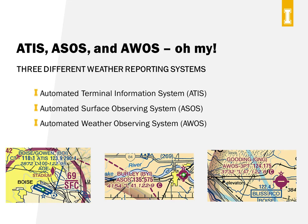The first is the Automated Terminal Information System, or ATIS. This is the gold standard of weather information because a human being is behind the controls. You'll only find ATIS at towered airports, and when the tower closes, so does the ATIS — and if it closes, it reverts to another type of weather station. ATIS can provide information beyond just weather. Boise has an ATIS station that operates at 123.9 megahertz.